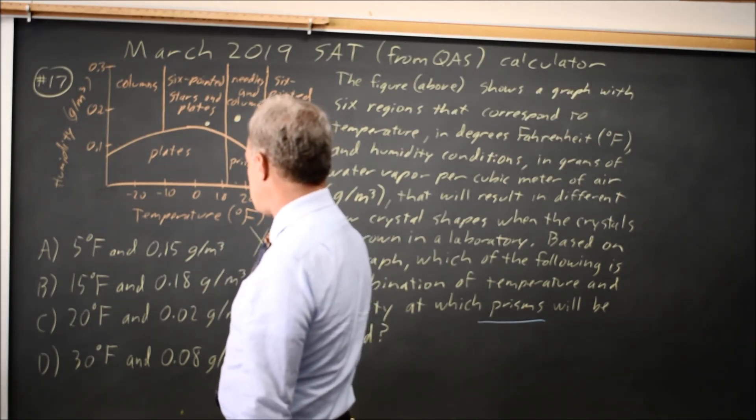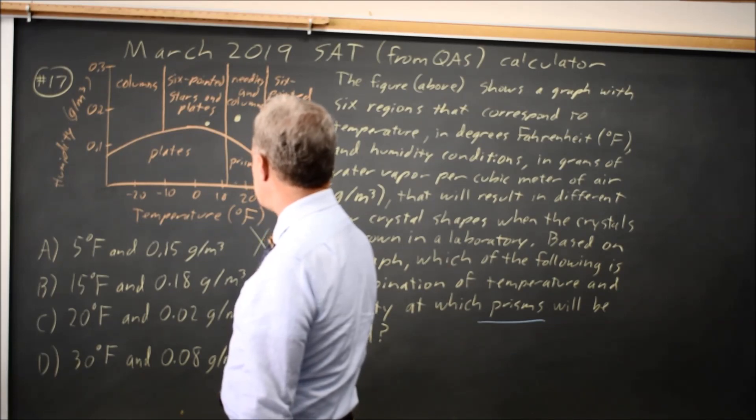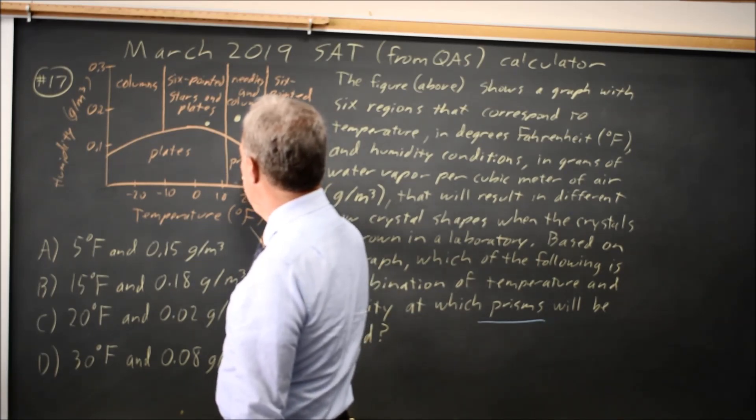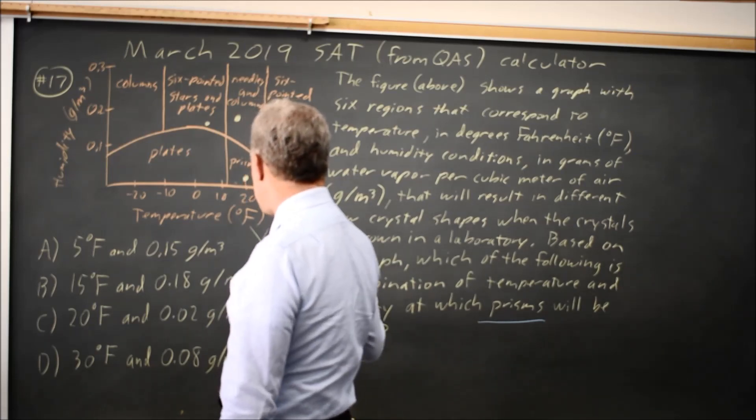20 degrees and 0.02. 20 degrees, 0.02 would be one-fifth of the way to 0.1, so that's down here. That is prisms.